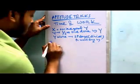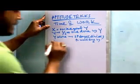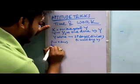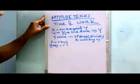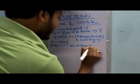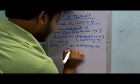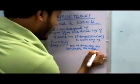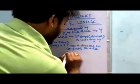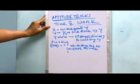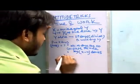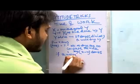If P can do a particular work in X days, and P plus Q together can do it in Y days, then the number of days required to complete the work if Q works alone equals XY divided by (X minus Y) days.